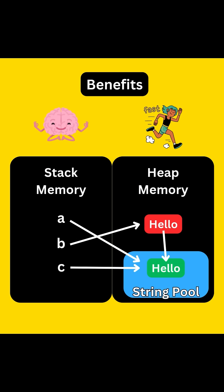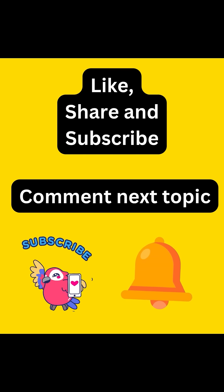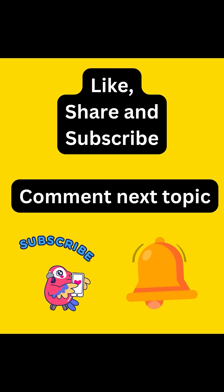Now the question is, why all this effort? The answer is simple: the string pool saves memory, avoids duplicates, and hence makes comparison faster, especially using the == operator.